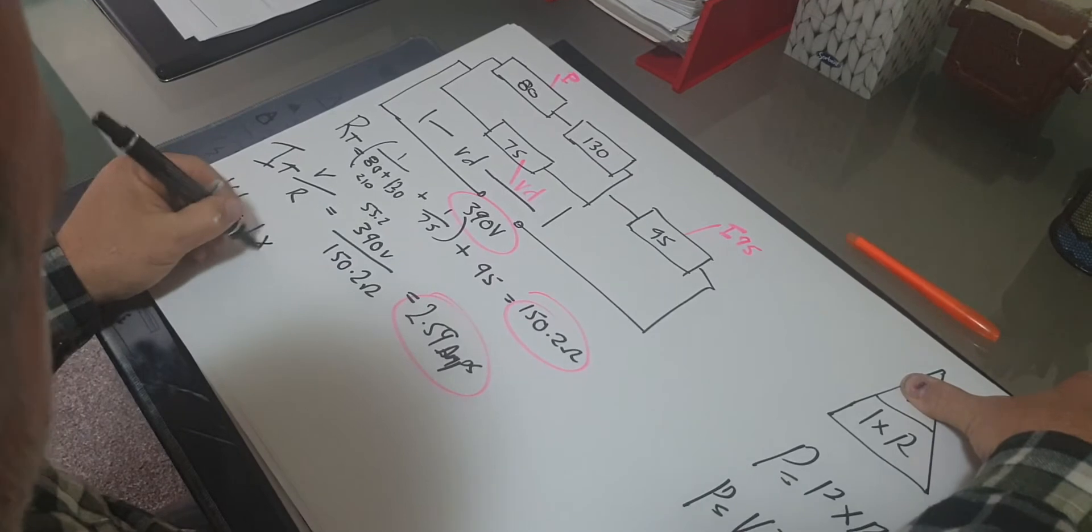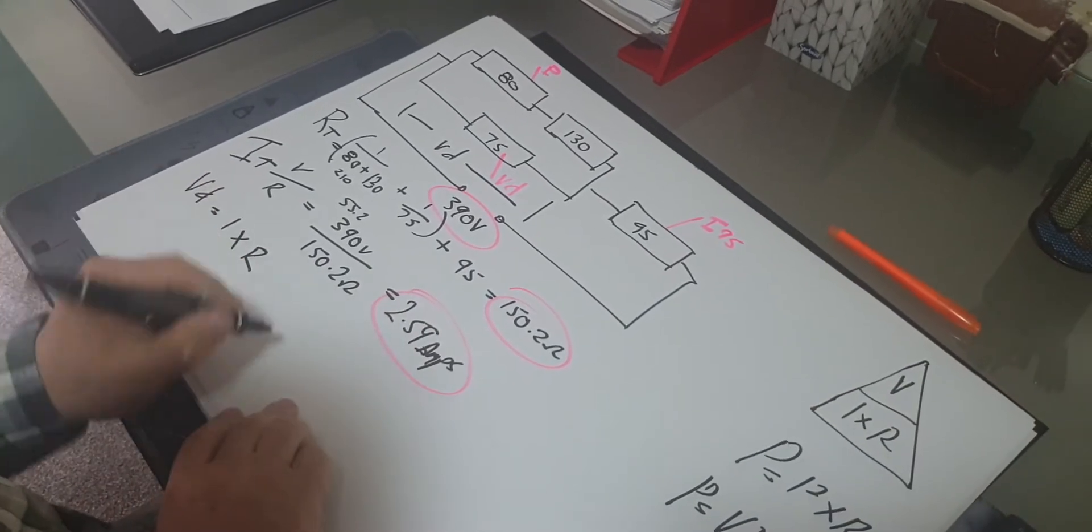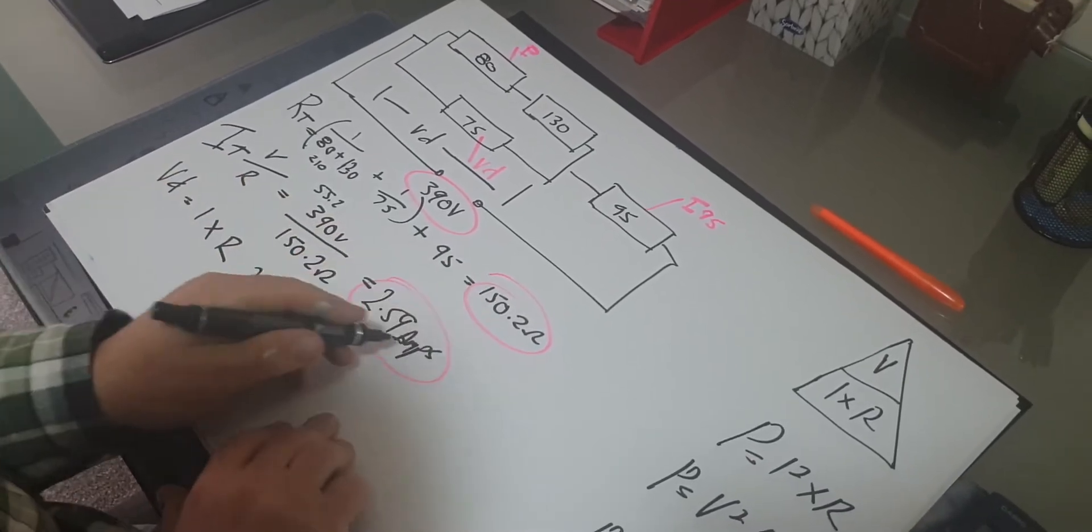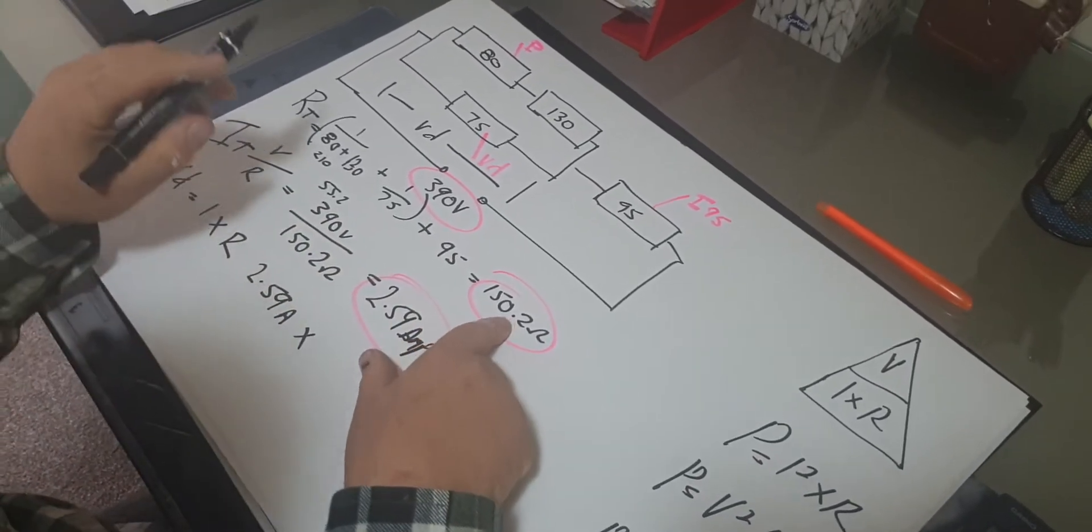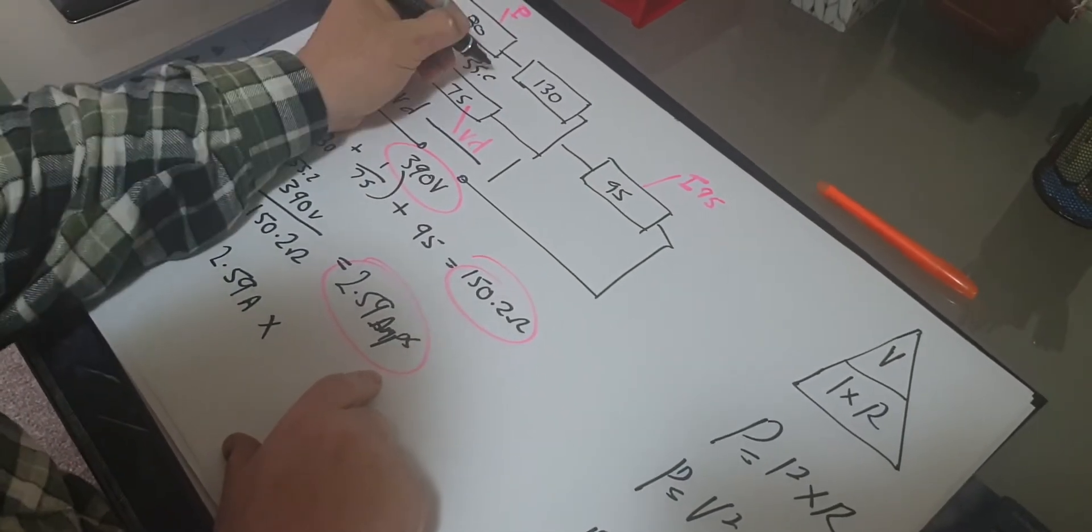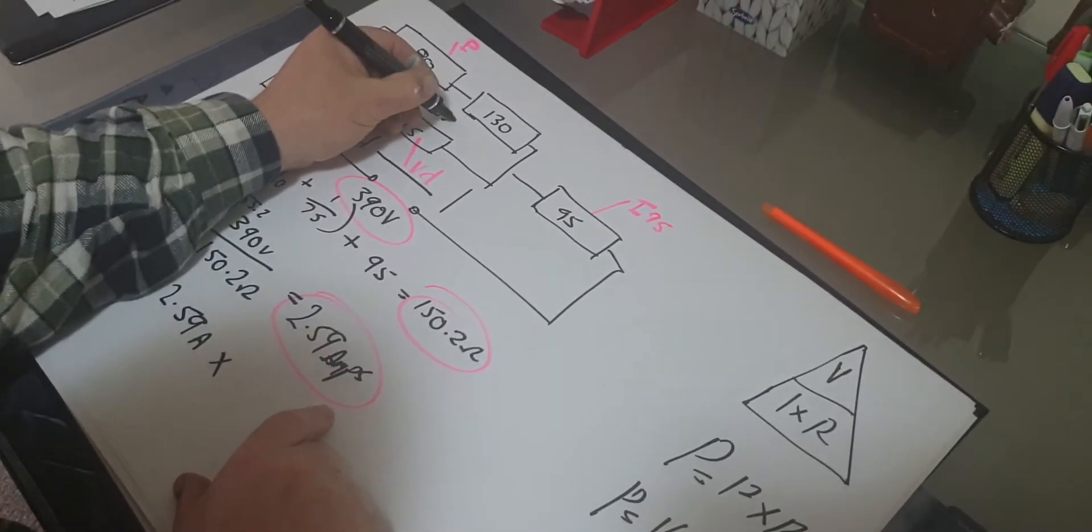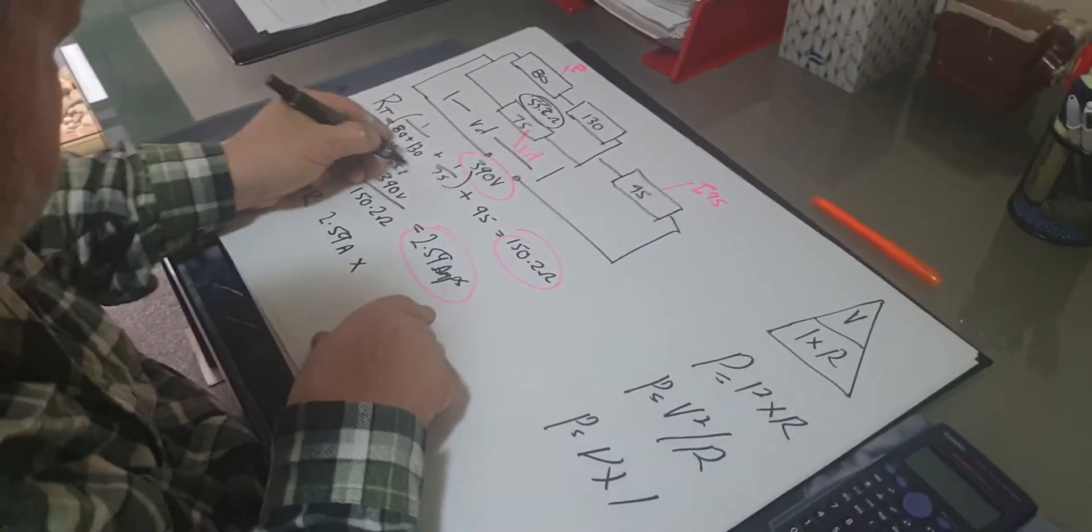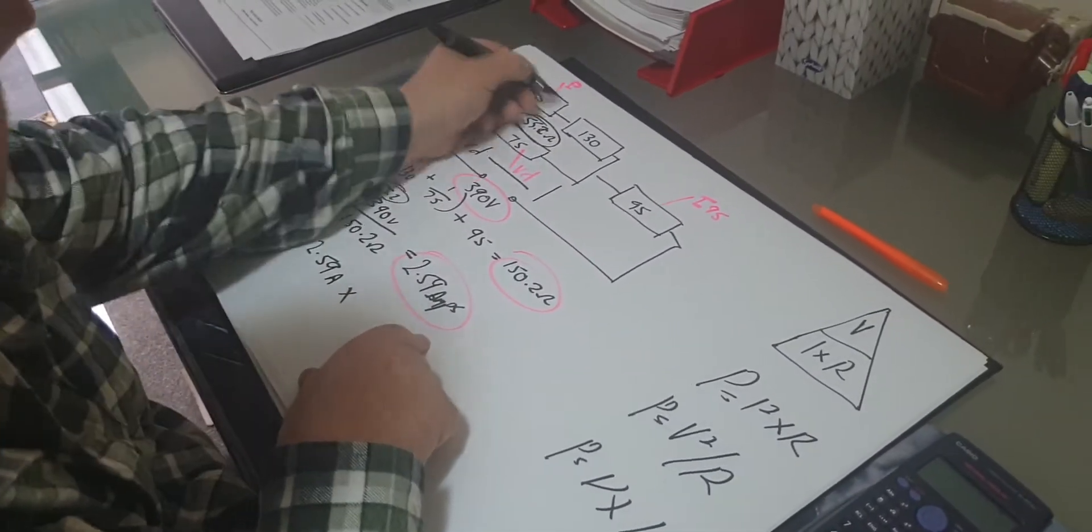What are my times? The current. Current is 2.59 amps times the total resistance. No, we're not doing the total resistance. We're going to do the combined resistance, 55.2 ohms. That was a value that we had when we worked out all three of these.